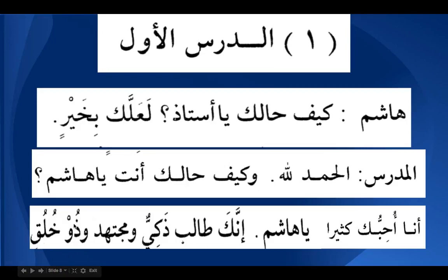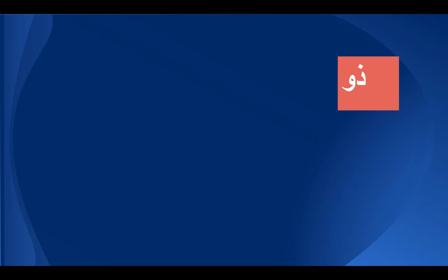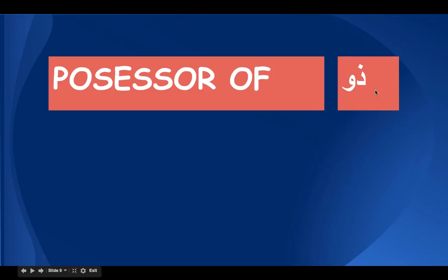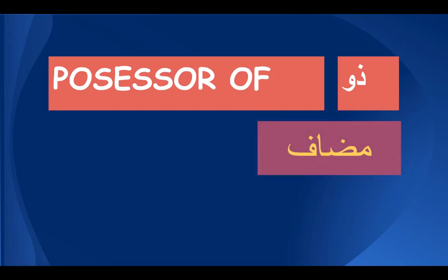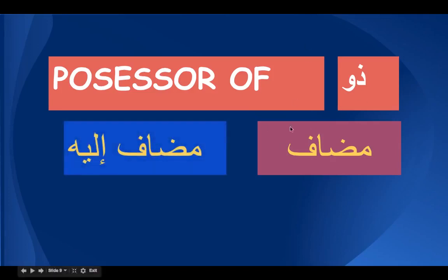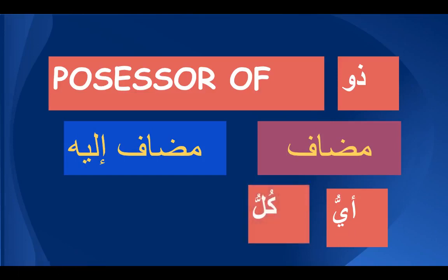Dhu means 'possessor of' — the one who has the quality. Dhu itself has the embedded meaning of 'possessor of,' so anything after it is a mudaf ilahi, meaning dhu will always come as a mudaf. There will always be a mudaf ilahi to explain more about dhu. Other nouns that always come as mudaf are ayyu and kullu, which we did in Book 1, and dhu is also among those.